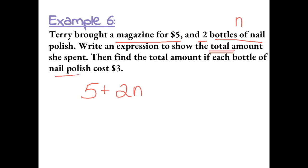So now, if we knew that each nail polish costs $3, now we can plug in 3 for N. So 5 plus 2 times 3. So order of operations says we need to do multiplication first, which gives us 6, bring everything down,